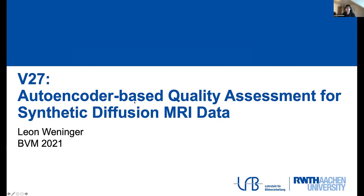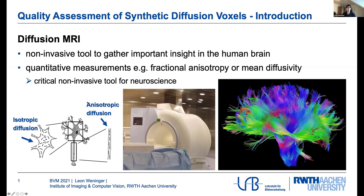My talk is about diffusion MRI and quality assessment for synthetic diffusion data. As perhaps not everybody is familiar with diffusion MRI, here is a brief introduction. Diffusion MRI is used as a non-invasive tool to gather important insights into the human brain, especially into neural transmission quality and the connectivity of the fibers in the brain.